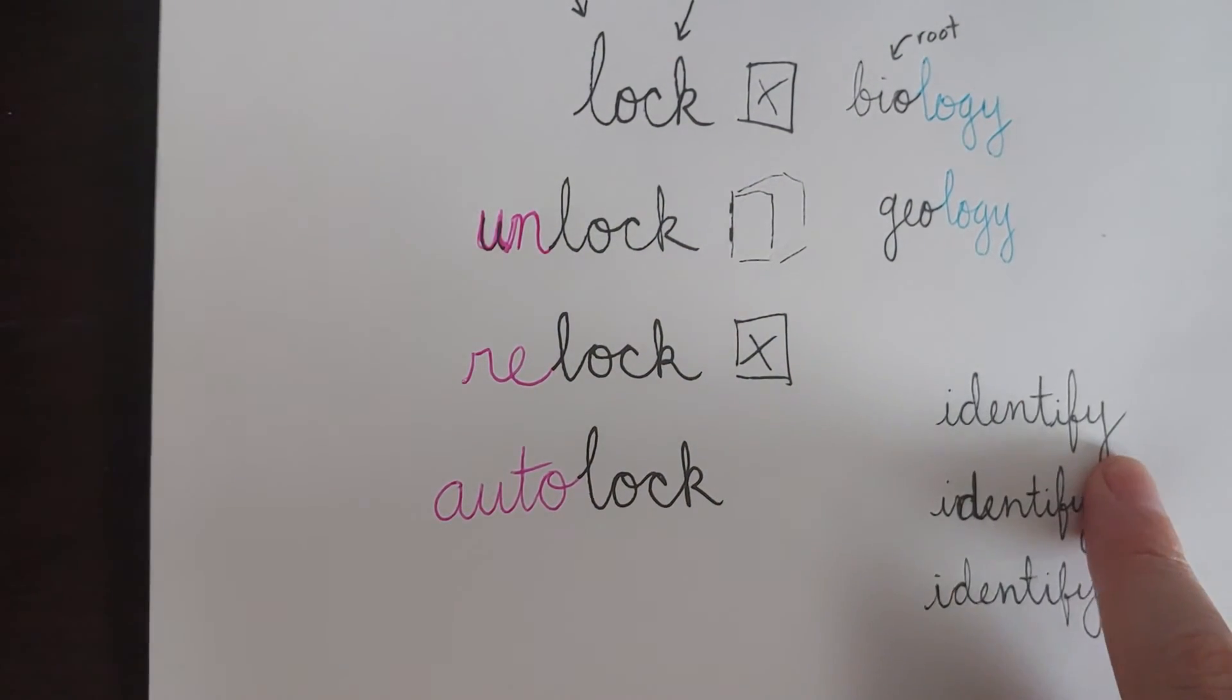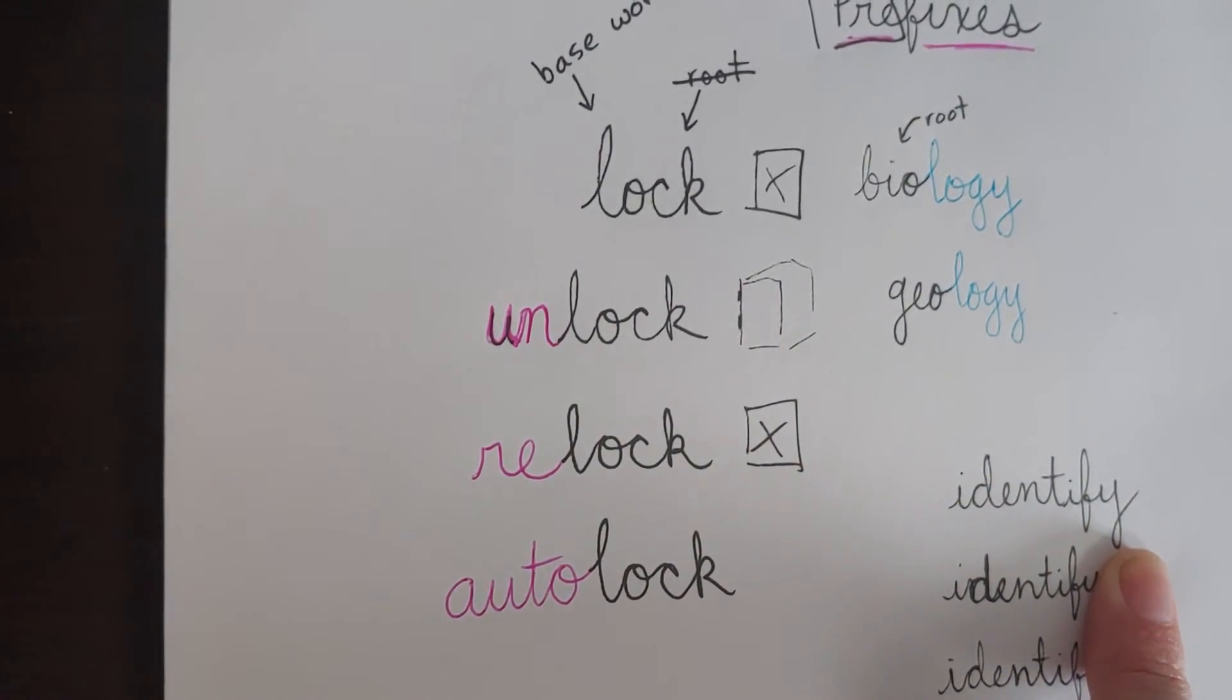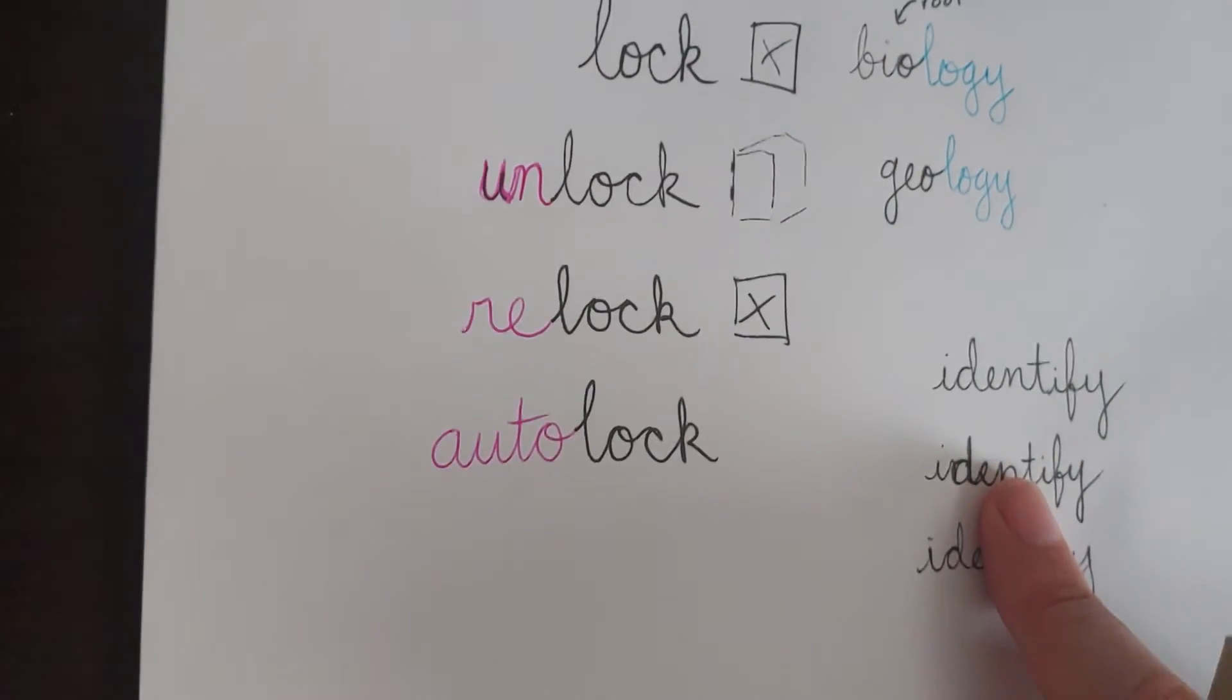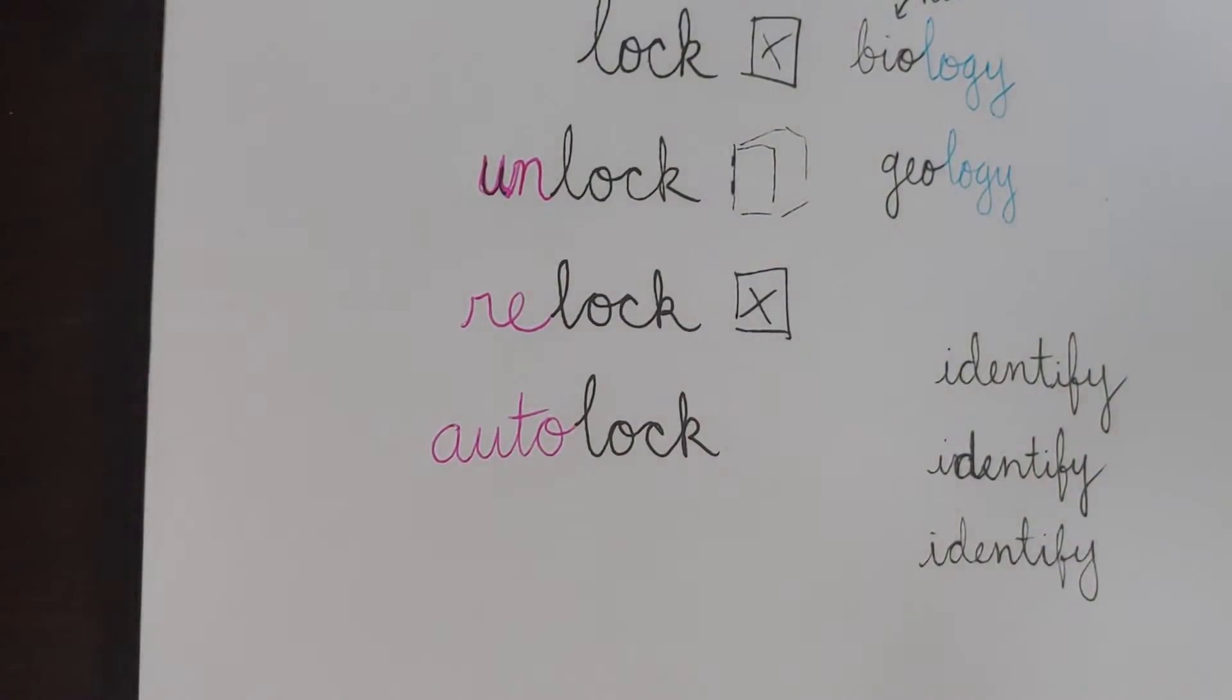So identify is going to be a base word rather than a root because identify is a word all on its own. So let's think about some prefixes. What could I put in front of the word identify to change its meaning? To identify something means to figure out what it is.